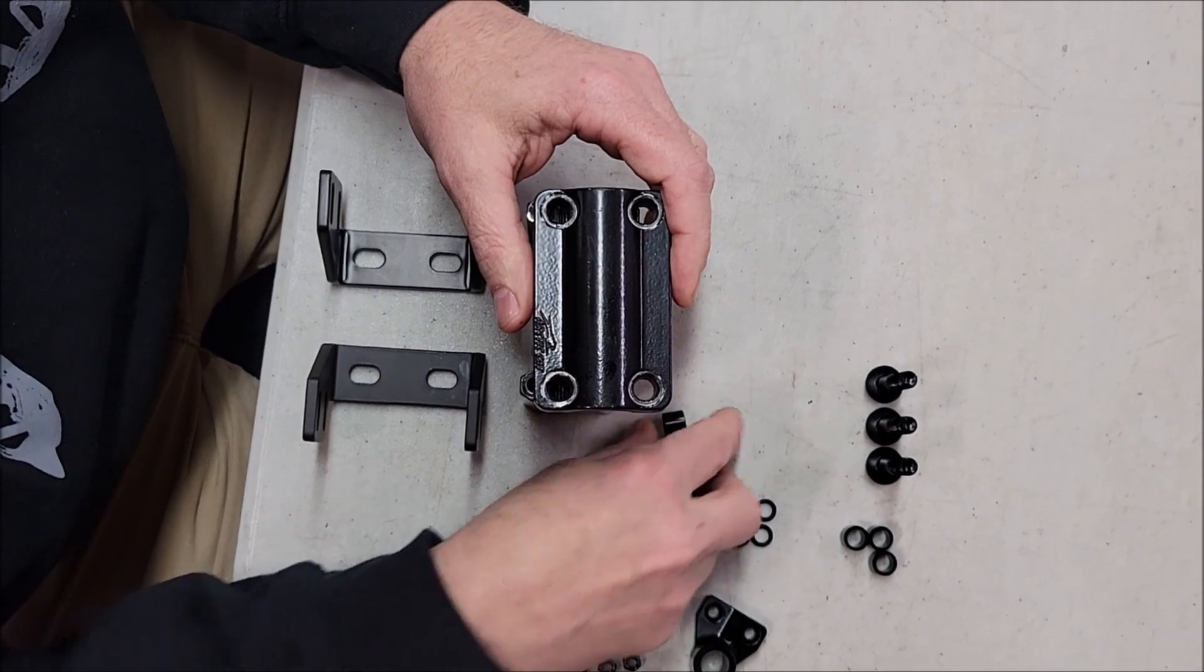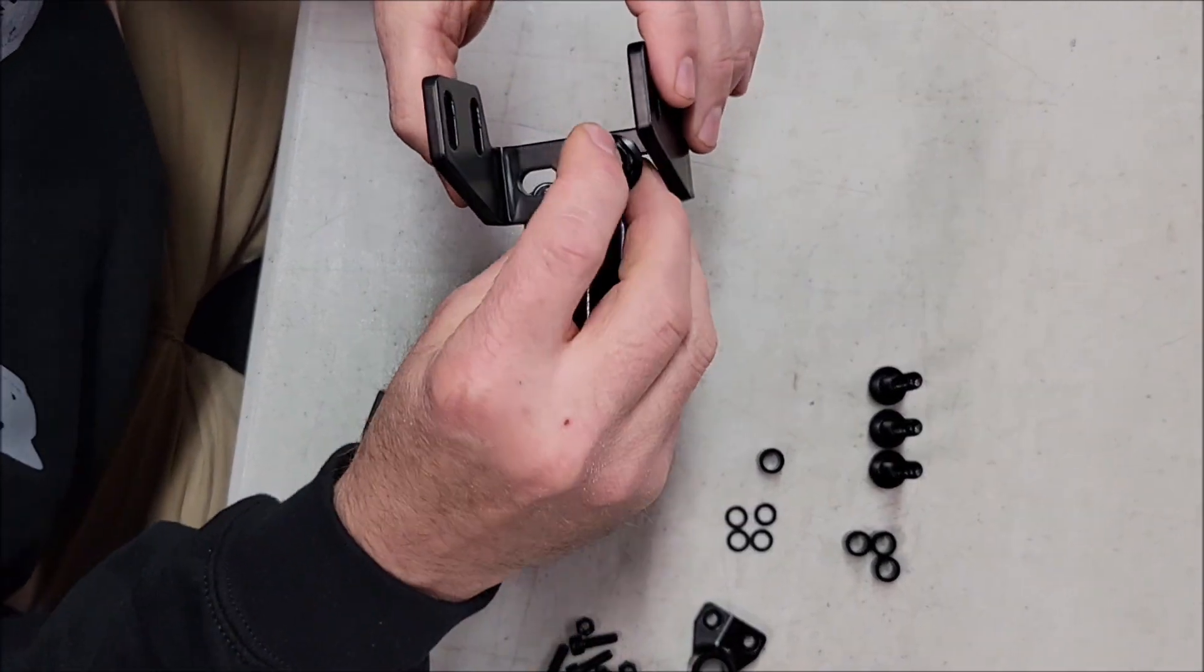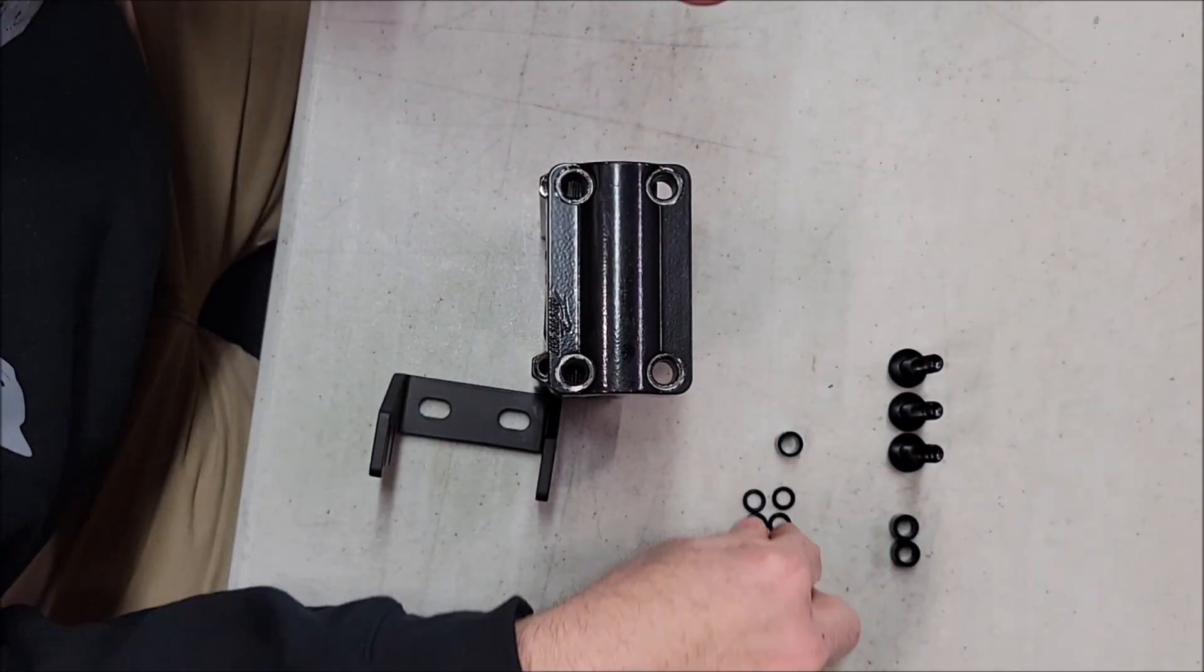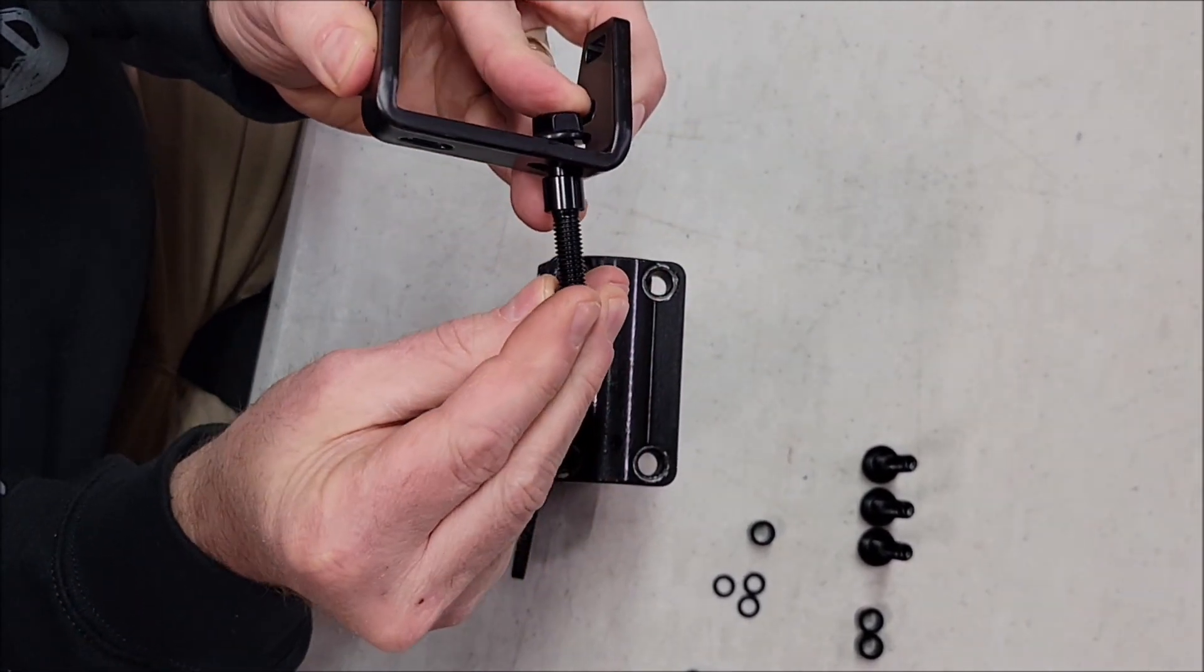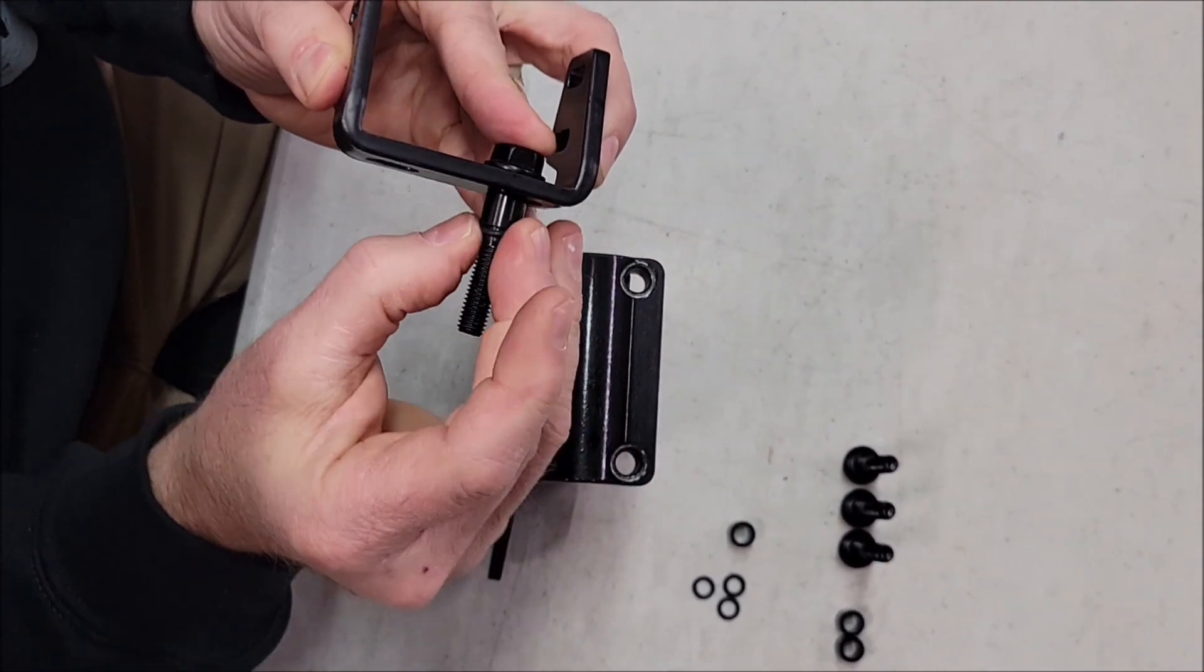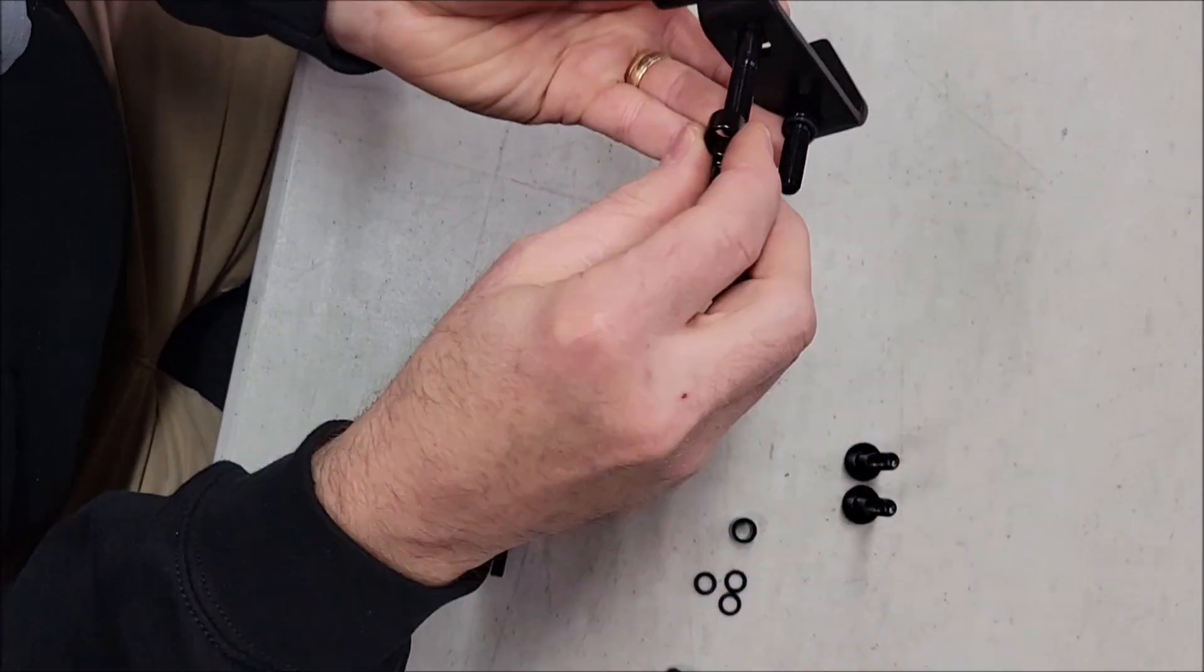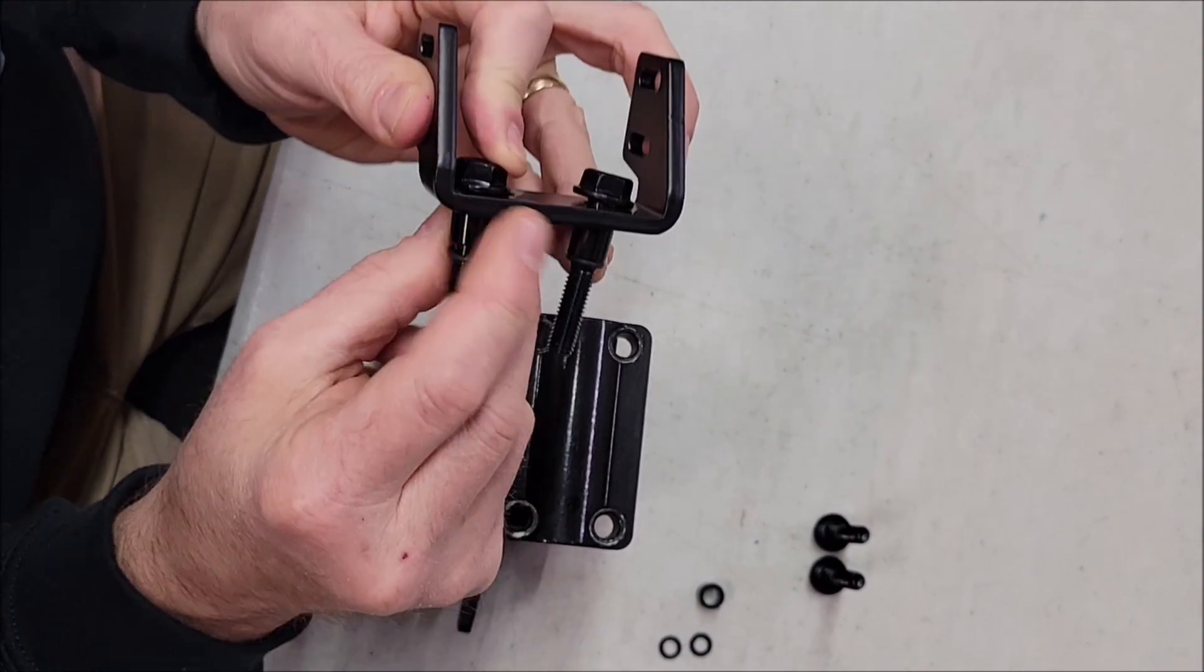You're going to take the bracket, drop the bolt in, put the spacer on, and then these O-rings hold the spacers just to make it easier to install everything. It's basically an extra set of hands. You're going to put them in like that.